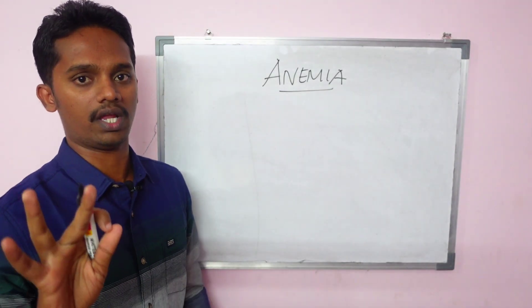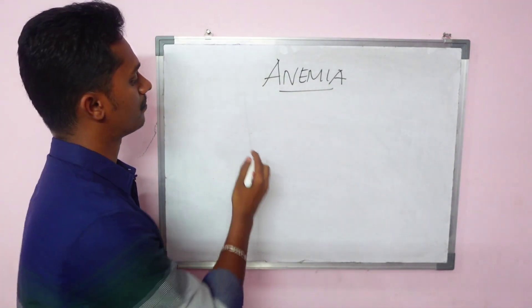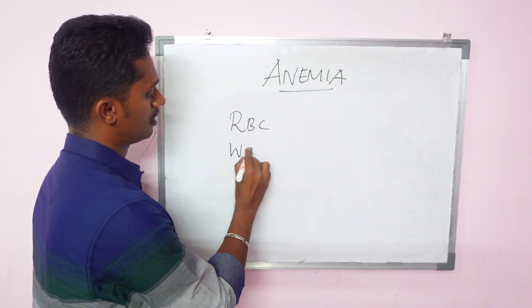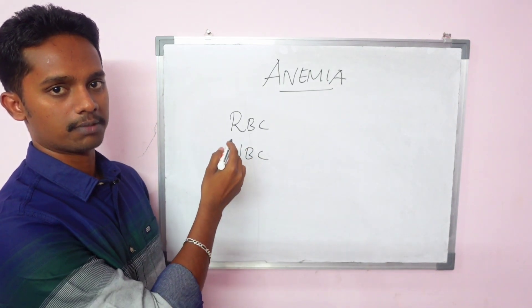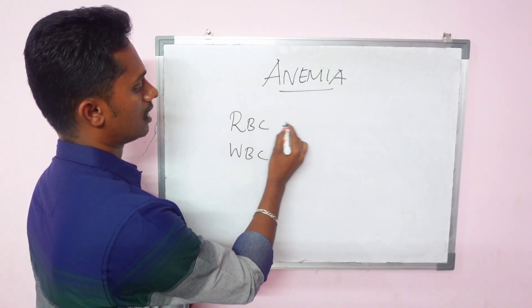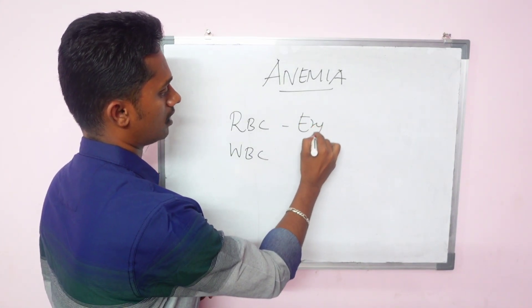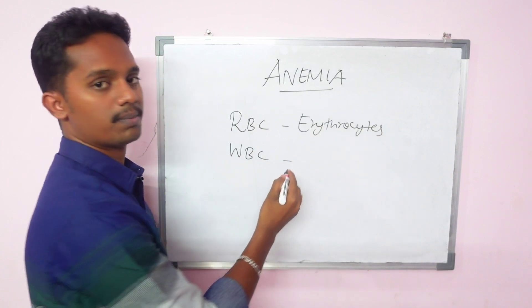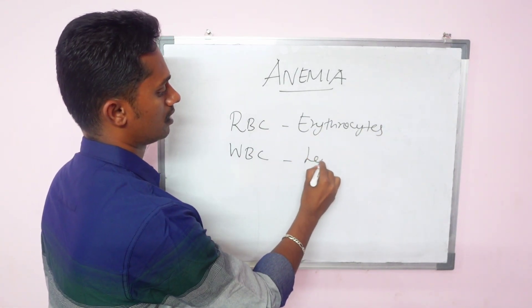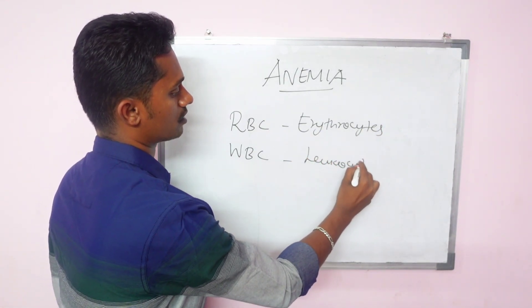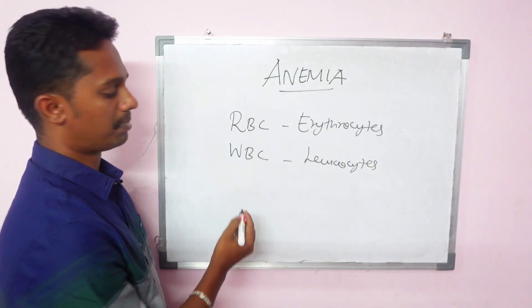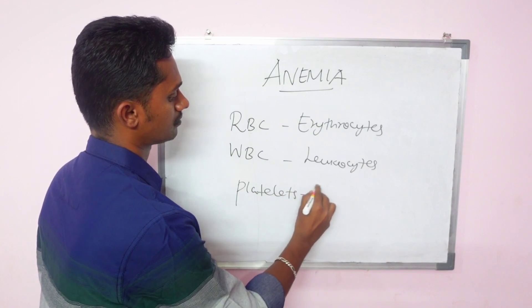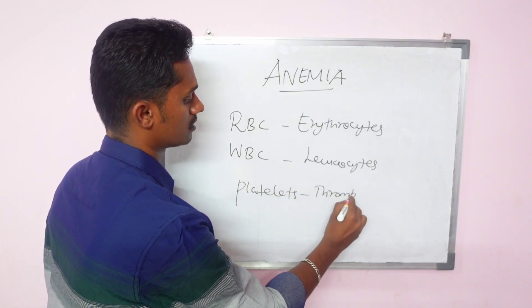We have three types of blood cells in our blood. These are RBC, then WBC — red blood cells and white blood cells. Red blood cells are also known as erythrocytes. White blood cells are also known as leukocytes. Then platelets, which are also known as thrombocytes.